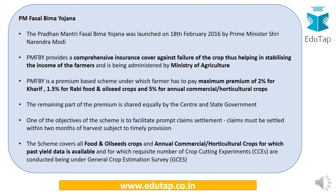Pradhan Mantri Fasal Bima Yojana was launched in 2016 by the Prime Minister as part of the government's goal to double farmers' income by 2022. It provides comprehensive insurance cover against crop failure to stabilize farmer income. Key facts: the premium is 2% for Kharif crops, 1.5% for Rabi crops and oilseeds, and 5% for horticultural or commercial crops. Claims must be settled within 2 months of harvest.